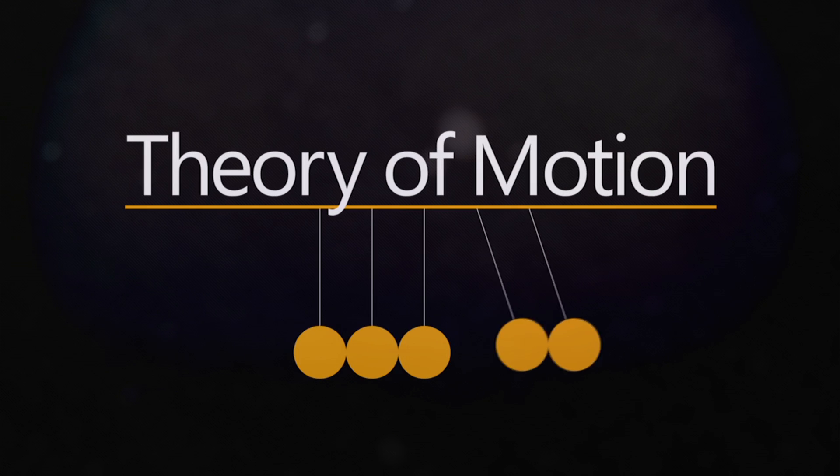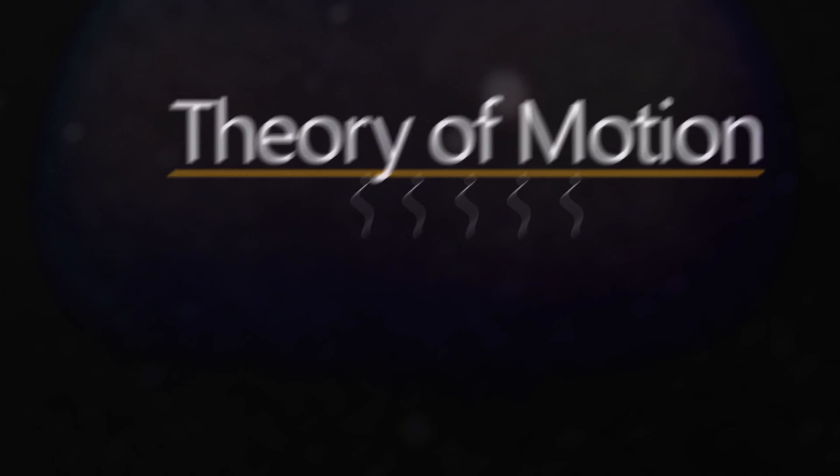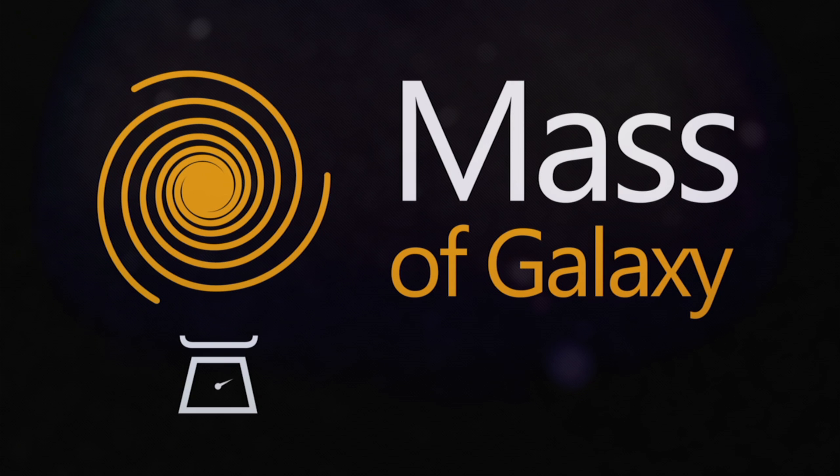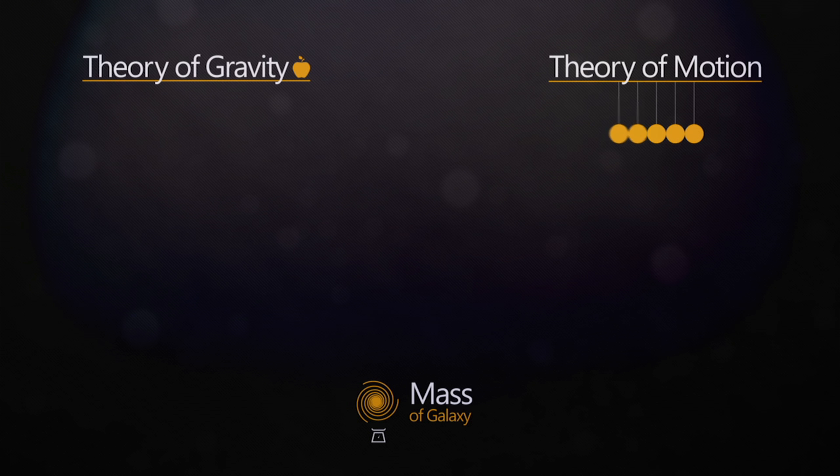Was Newton's theory of gravity wrong? Was his theory of motion wrong? Or was it possible that astronomers had incorrectly measured the galaxy's mass? All options were investigated, and all were ruled out except one.